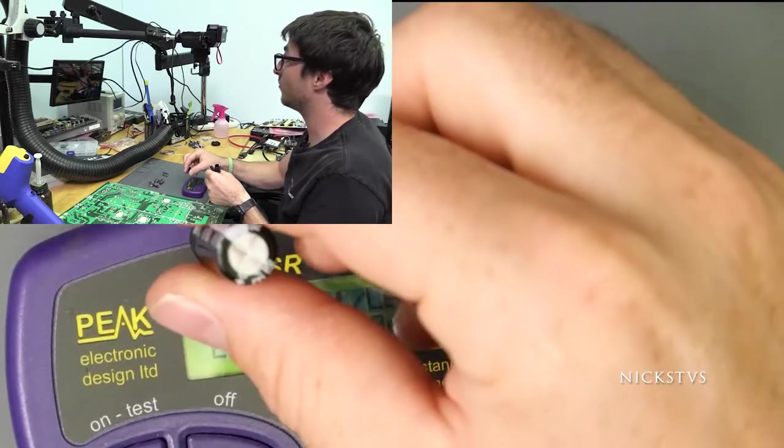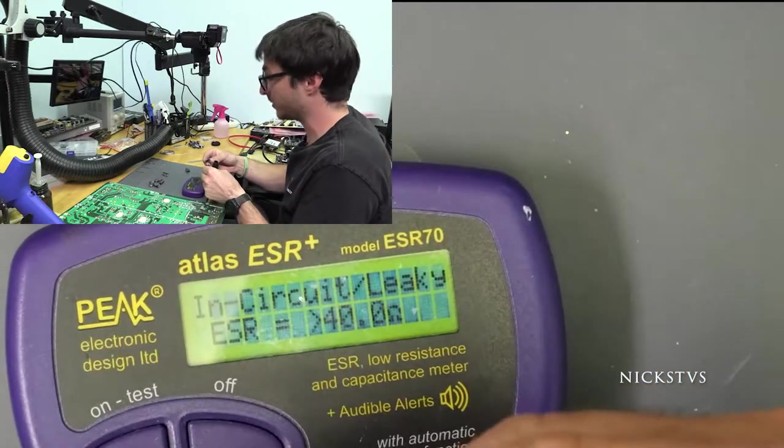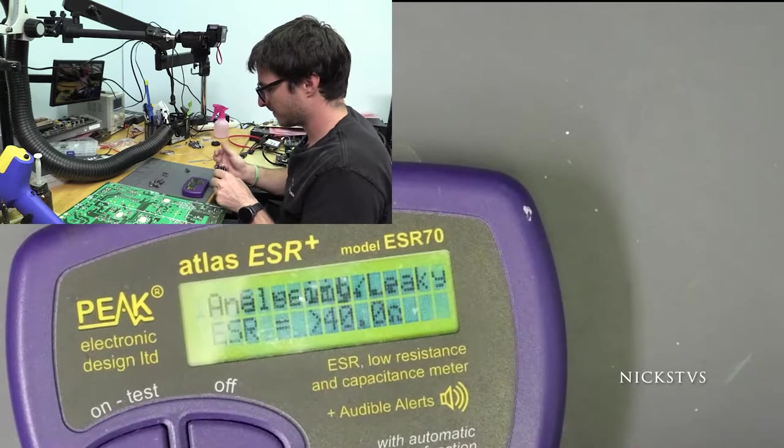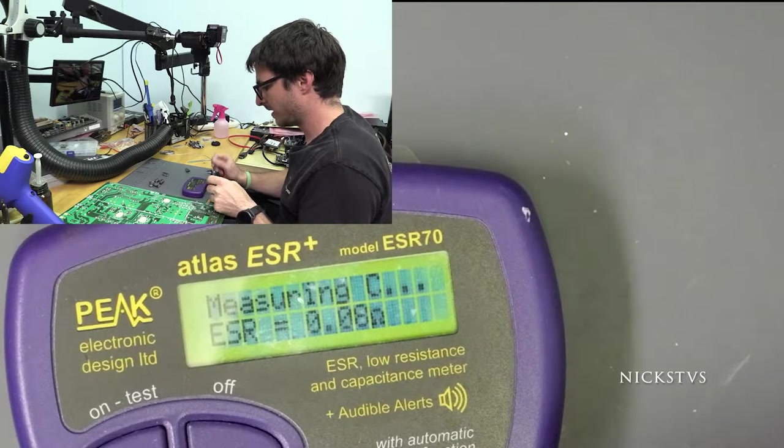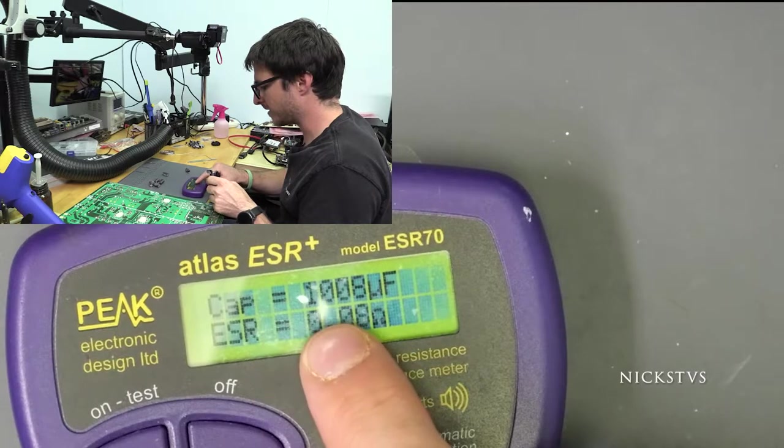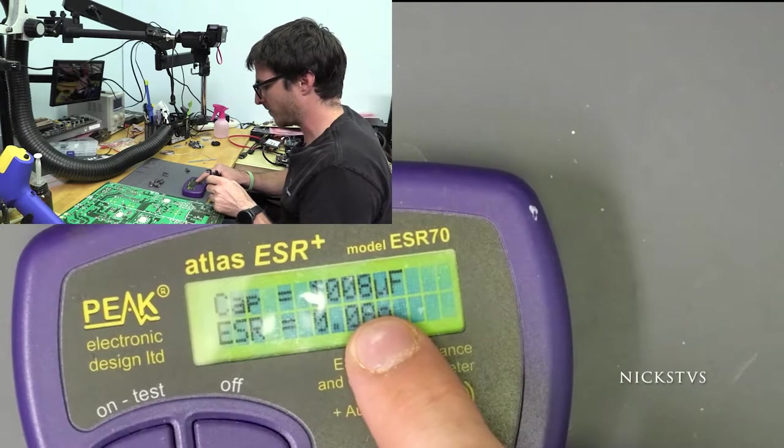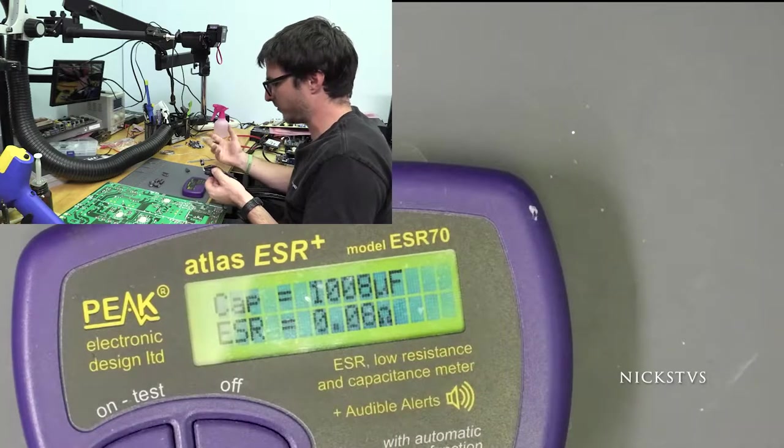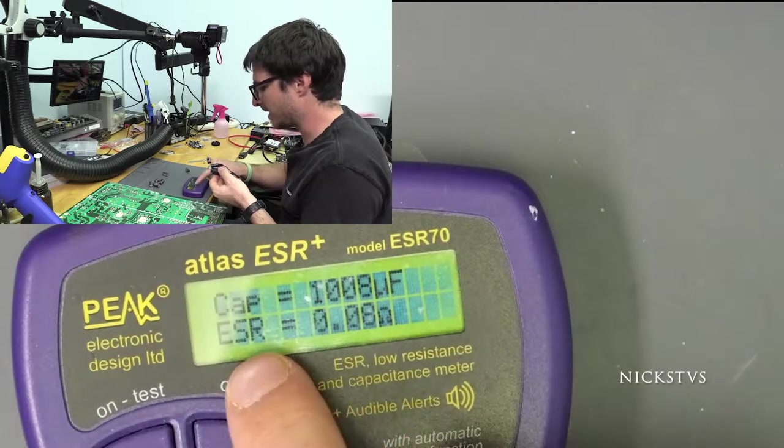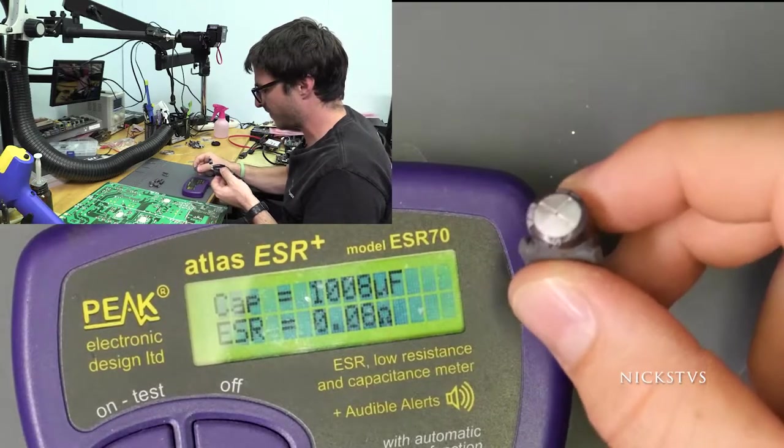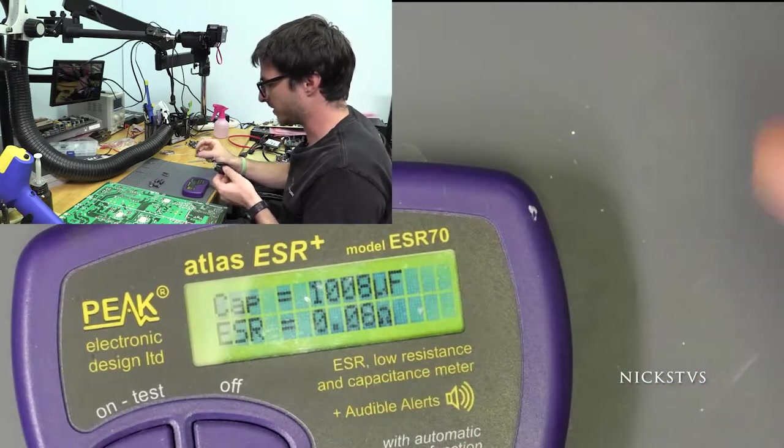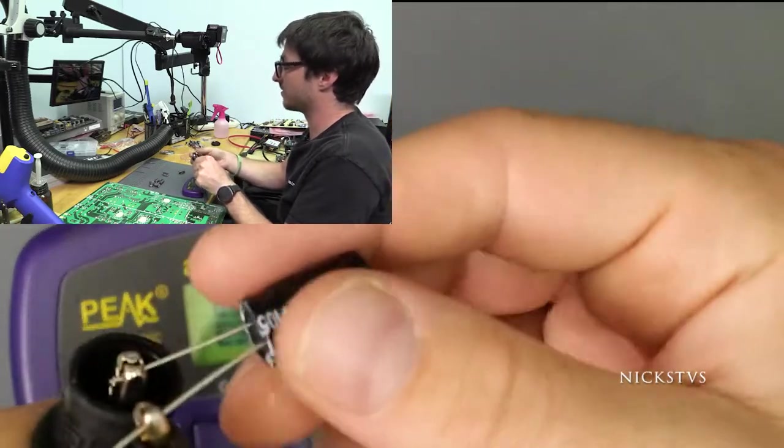And let's just compare it to one of the good ones that we're going to be using to replace it with. And then this one says cap equals 1008 microfarads. So it's off by eight microfarads, which is well within our tolerance. And then ESR, the bad one was saying 40. This one is saying 0.08 ohms. So that's what we want to see. That means we have a good capacitor here.